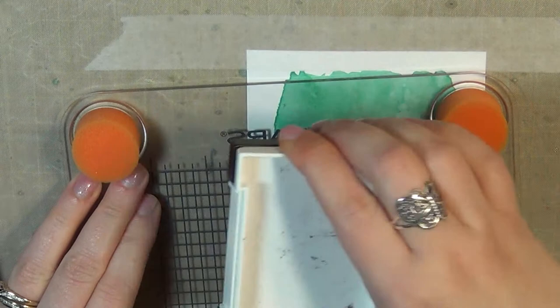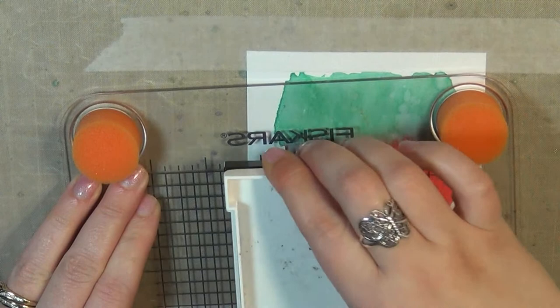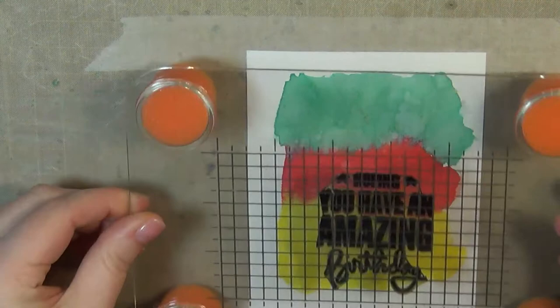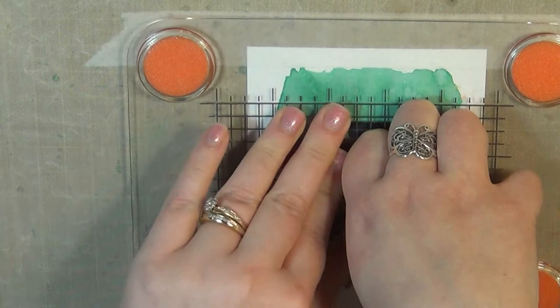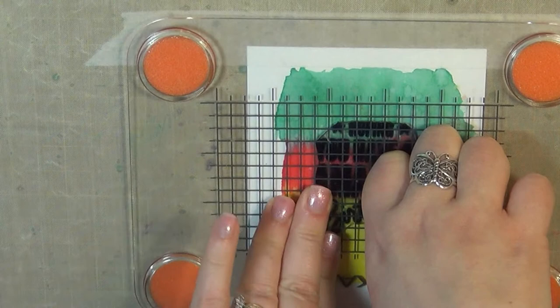I'm inking this up with my favorite black ink—Versafine Onyx Black ink. I'm getting that really good and covered, and then I'm just going to stamp this down with my stamp press and get it in the place that I want it. I really do like this ink because it gives off such a crisp, bold black impression.